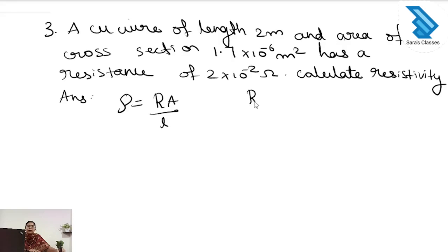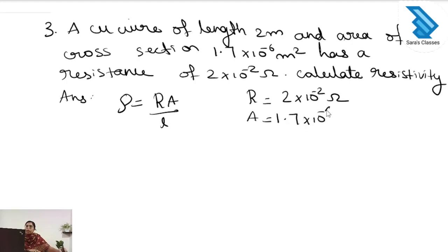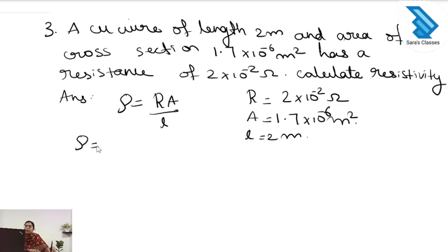What is given in the question? Resistance is 2 × 10⁻² ohm, area of cross section A is 1.7 × 10⁻⁶ m², and length is 2 meter. We can directly substitute: rho equals 2 × 10⁻² multiplied by 1.7 × 10⁻⁶ divided by 2.